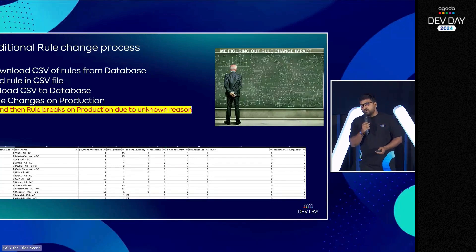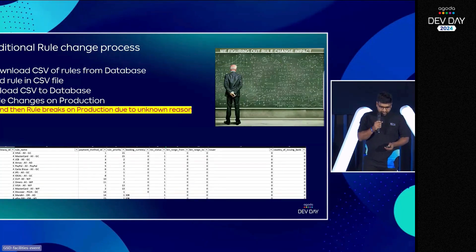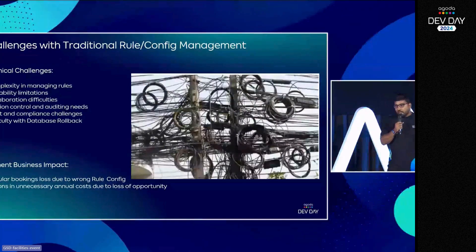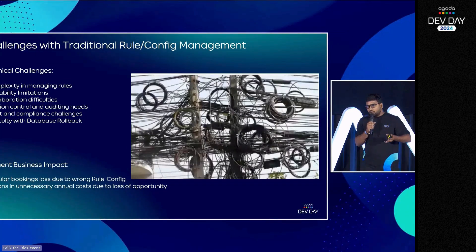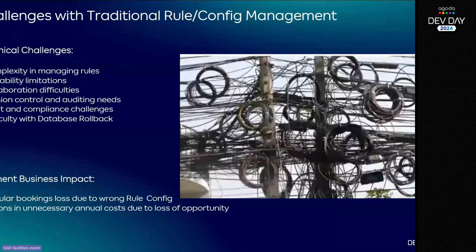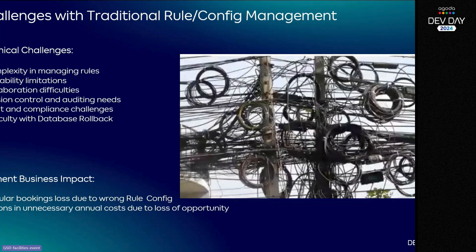The story of rule change or config change is not new in the industry. When a company is small there is a small config and you can manage it. But as soon as this grows — 4,000 rules, 20,000 variables for DevOps, Kubernetes, Docker — it gets complex everywhere. It becomes beyond repairable if you keep it in a database and start making changes on the fly.